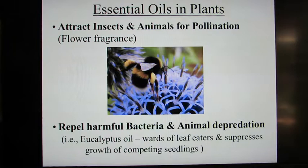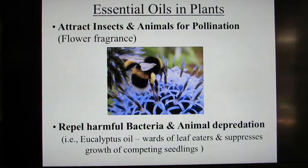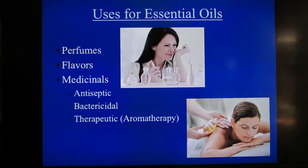Essential oils can also repel harmful bacteria and animal depredation. For example, the leaves of eucalyptus contain a strong essential oil which wards off leaf-eaters. When the essential oils fall to the ground, they suppress the growth of competing seedlings. Walnuts similarly give off a chemical that has the same effect — a kind of chemical warfare in the plant kingdom.